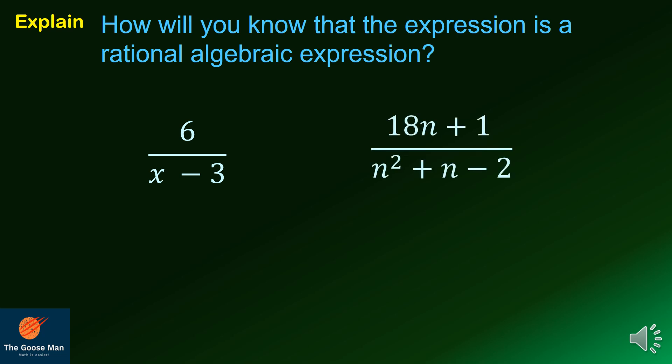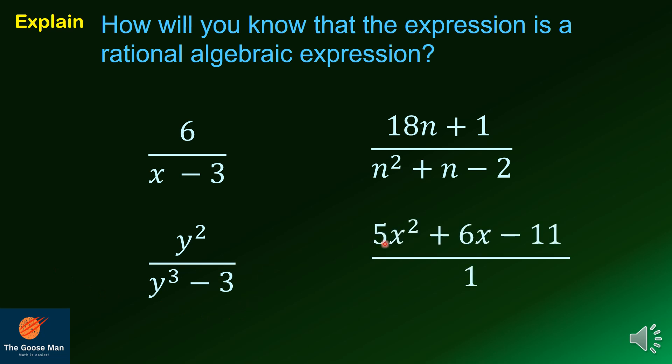Next, 18n plus 1 all over n squared plus n minus 2 is also a rational algebraic expression because both numerator and denominator are polynomials. Similarly, y squared all over y cubed minus 3 is a rational algebraic expression. Finally, 5x squared plus 6x minus 11 all over 1 is also a rational algebraic expression because both numerator and denominator are polynomials.